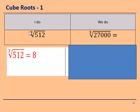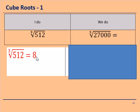Now the cube root of 512. This one was a bit more difficult. But 8 times 8 times 8 equals 512, so working backwards, the cube root of 512 is equal to 8. Please copy that down and try the We Do for yourselves.